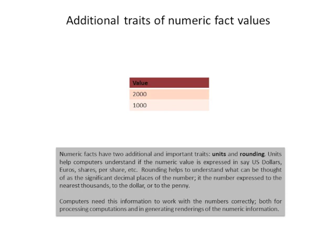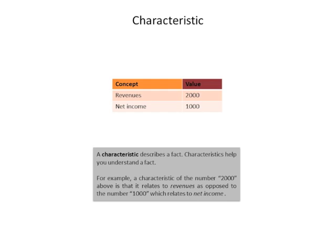Facts also have characteristics. On the earlier slide, we saw two numbers — 2,000 and 1,000 — but we didn't really know what those numbers were for. Here you can see we've added the characteristic concept: the first fact with a value of 2,000 describes the concept revenues, and the second fact with a value of 1,000 describes the concept of net income.